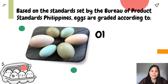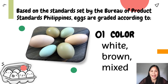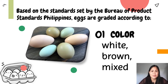Let us now proceed on how eggs are being graded. Based on the standards set by the Bureau of Products Standards Philippines, eggs are graded according to color — either white, brown, or mixed. Why are chicken eggs different colors? Contrary to popular belief, a brown chicken egg is not healthier than a white chicken egg. Remember that.